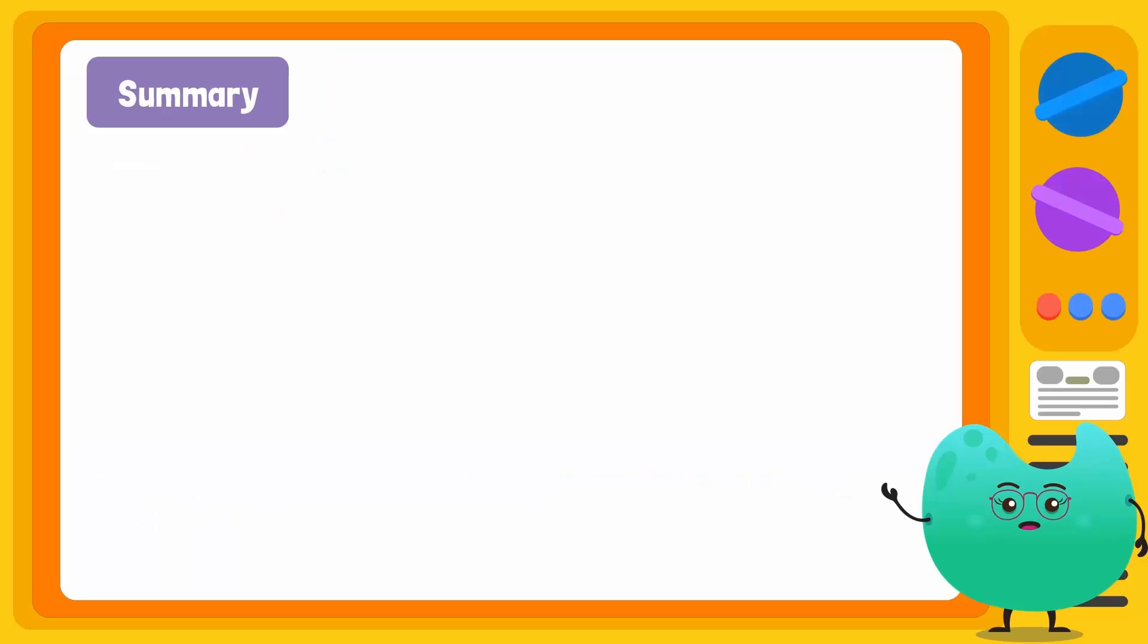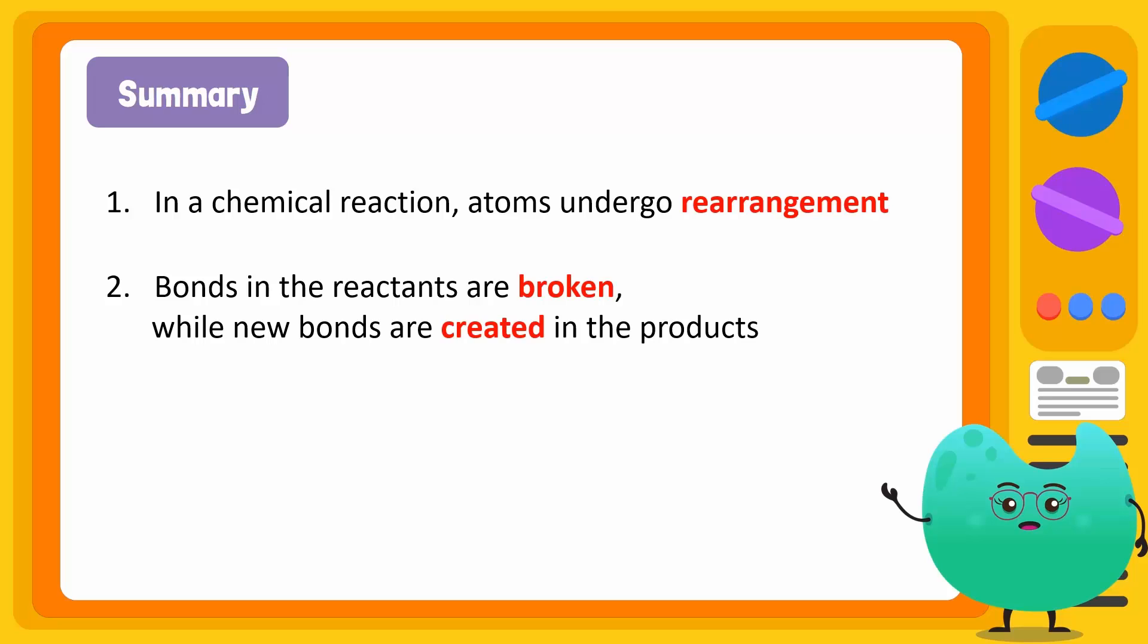To summarize, atoms rearrange themselves during a chemical reaction. Bonds between the reactants are broken and atoms rearrange to form new bonds. No new atoms are created or destroyed in the process.